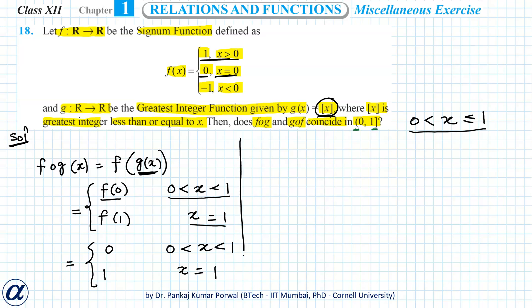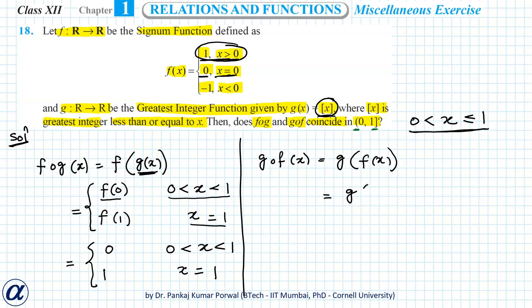Similarly, gof(x) equals g(f(x)). Since x is in the interval 0 < x ≤ 1, x is always greater than 0, so we use the definition f(x) equals 1. Therefore g(f(x)) becomes g(1), and the greatest integer of 1 is just 1.